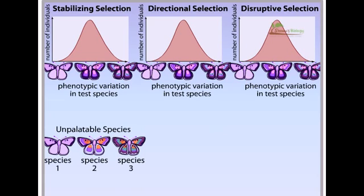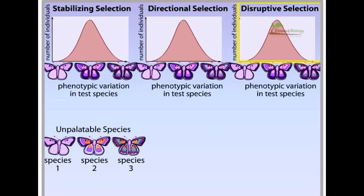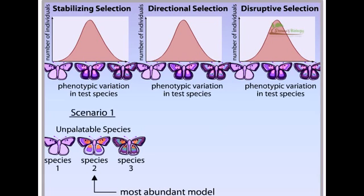Depending on the abundance of the models, the mimics will undergo stabilizing, directional, or disruptive selection. In our first scenario, the model species with intermediate markings is the most abundant in the environment.